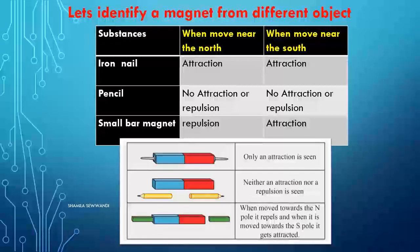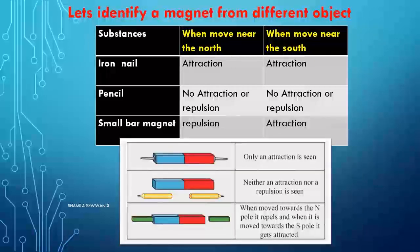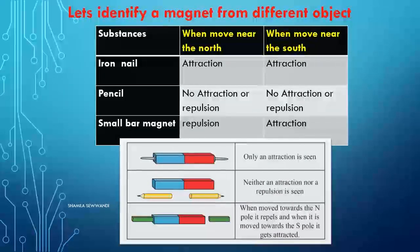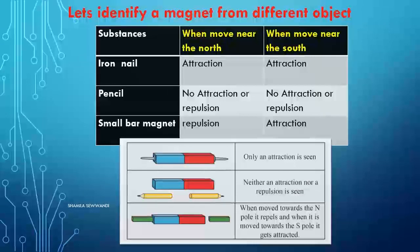For the small bar magnet: when moved near the north pole, repulsion can be seen. When moved near the south pole, attraction takes place. When moved towards the north pole it repels, and when moved towards the south pole it gets attracted. Therefore, it should be a small bar magnet.